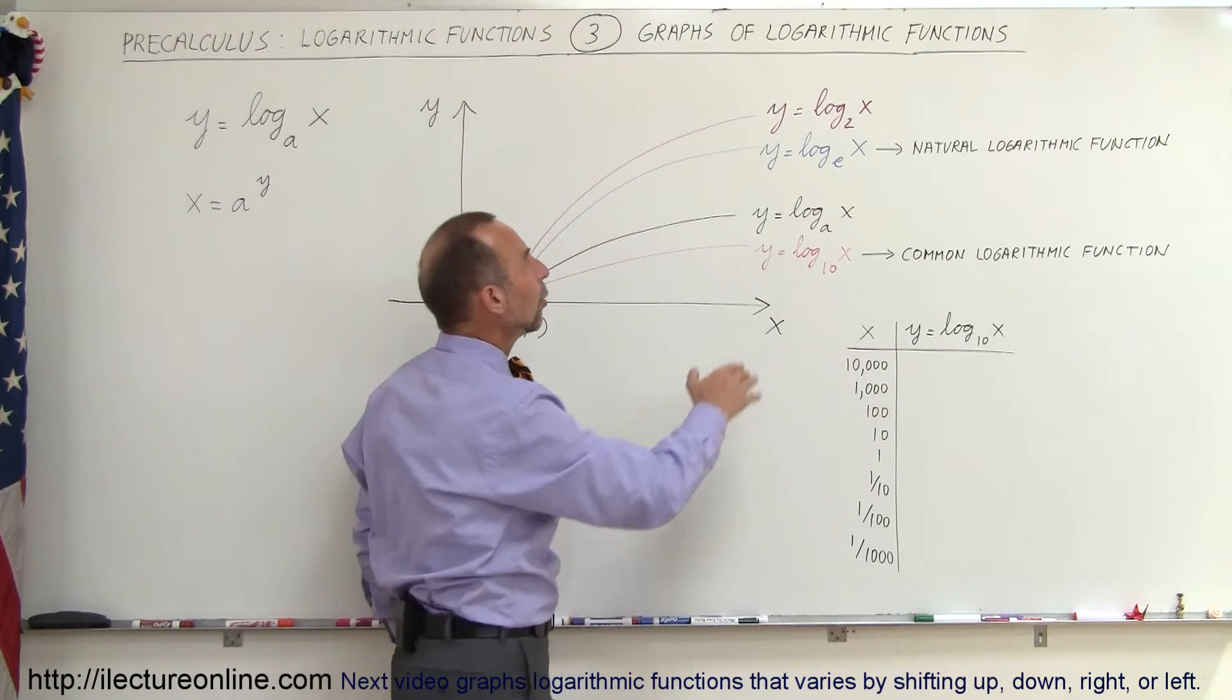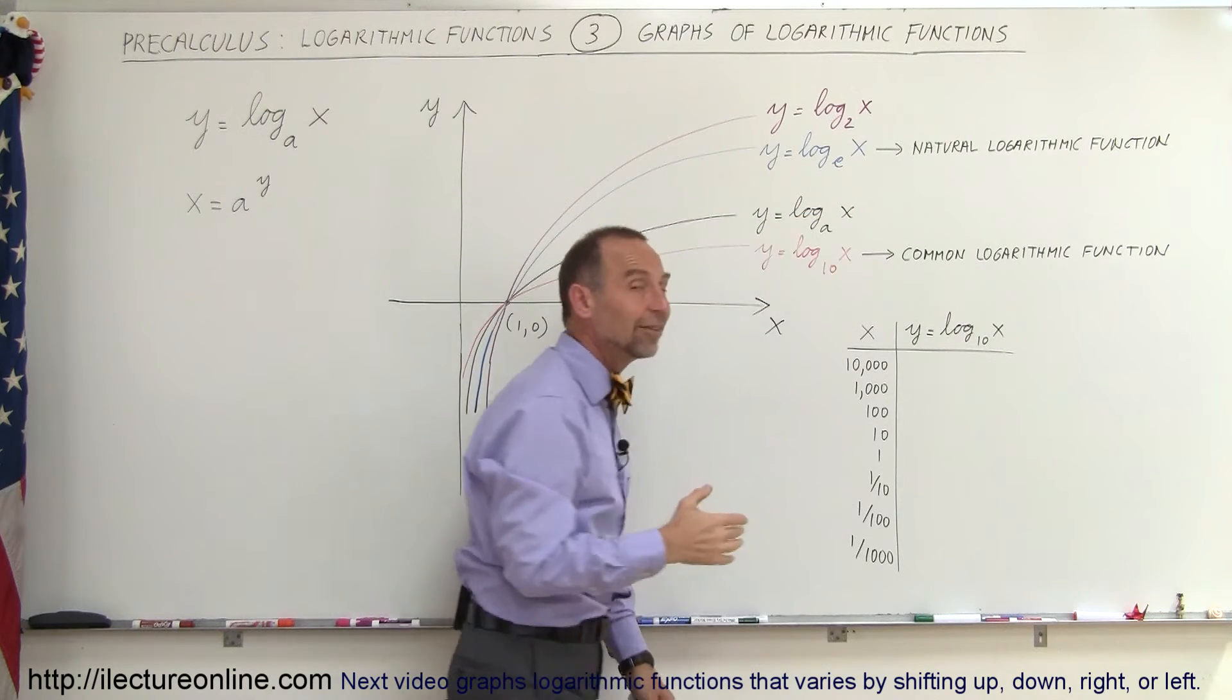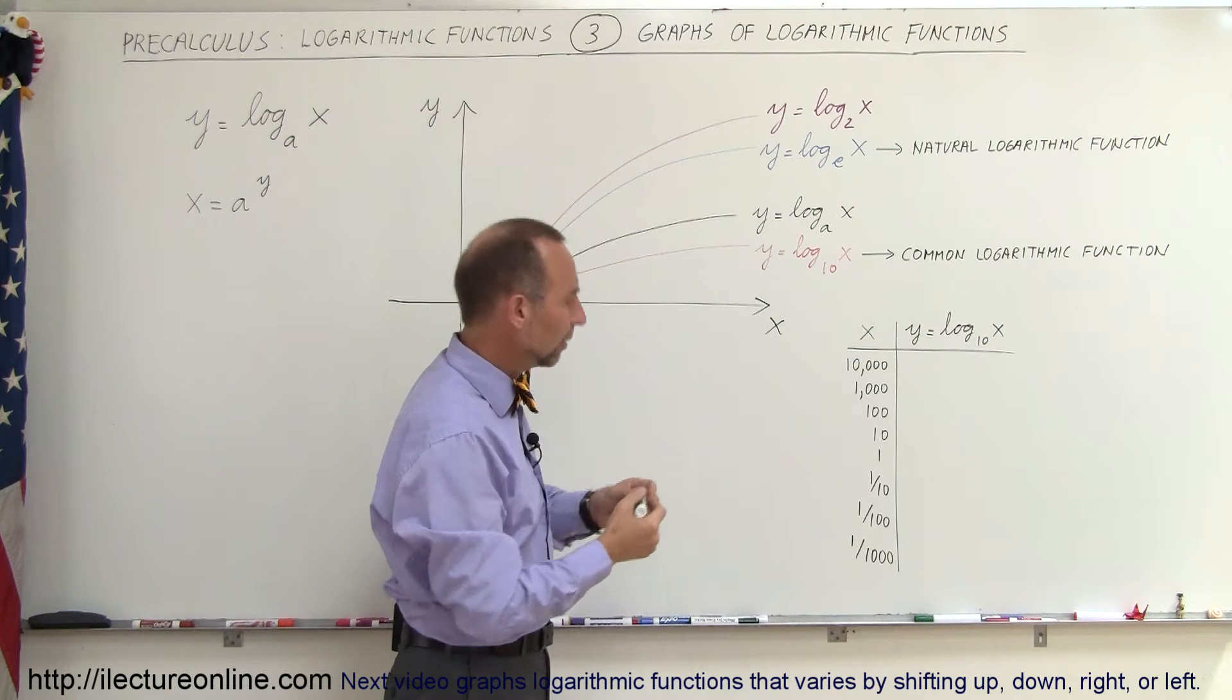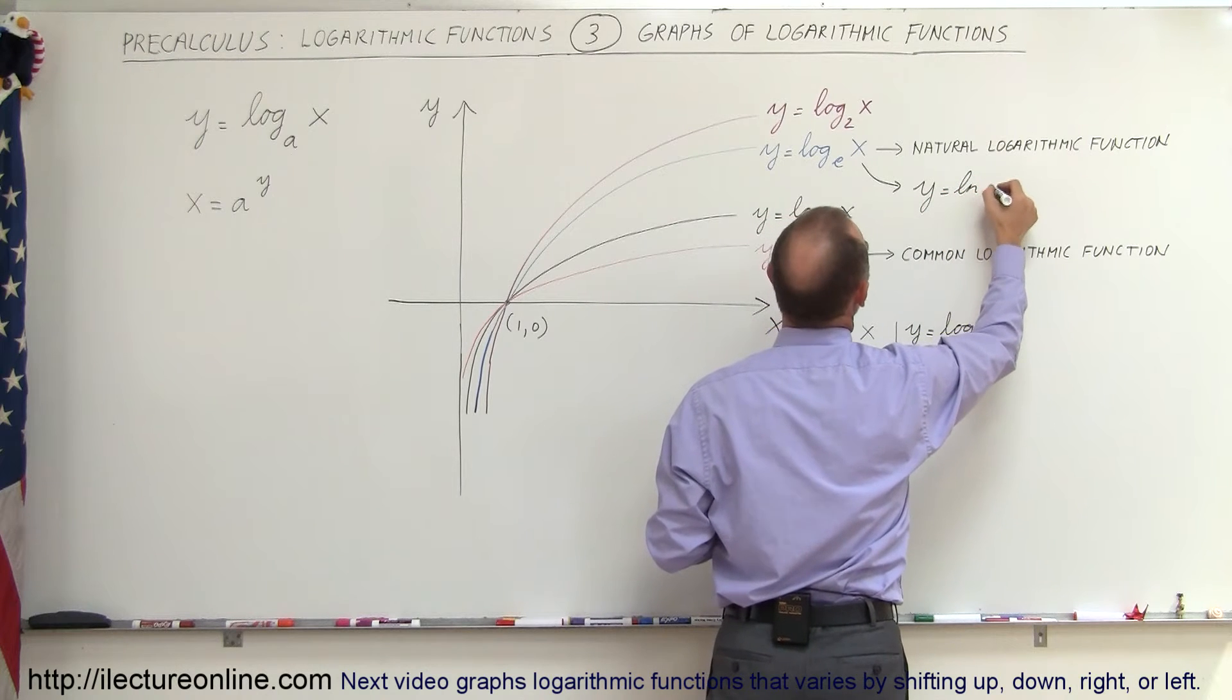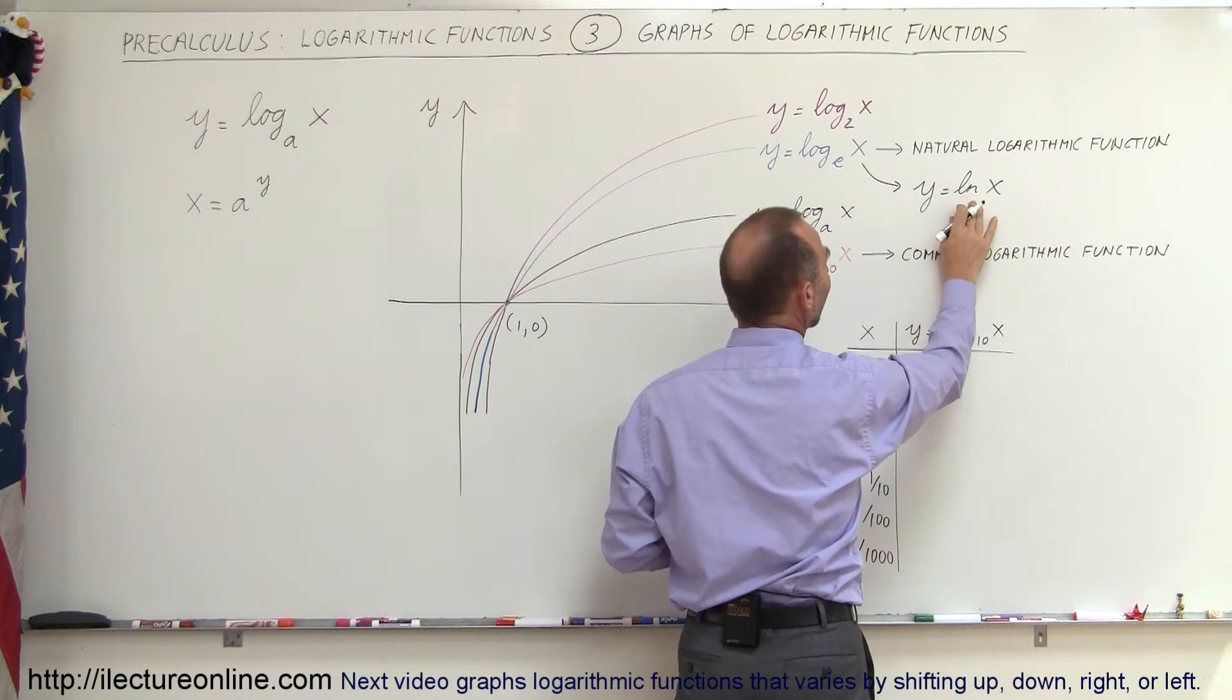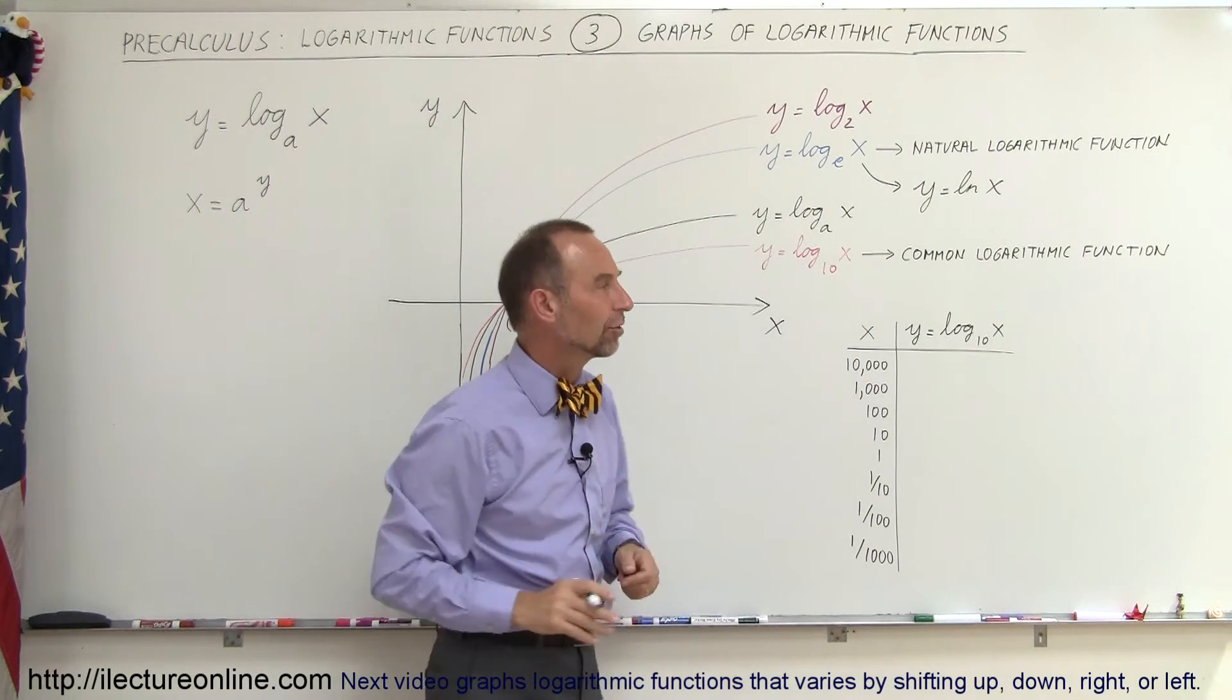Also, notice, we can write y equals the log to base e of x. Now, e, of course, is that natural number 2.71828 and so forth. And another way of writing that, we can say that this is equal to y equals the natural log of x. So, when we have base e, we can actually write as ln and that means the natural logarithmic function and we'll get into more details of that later.